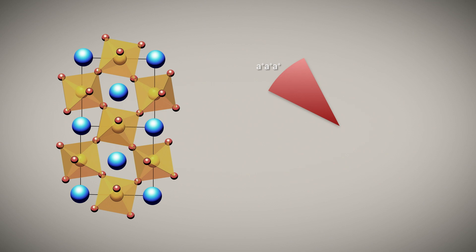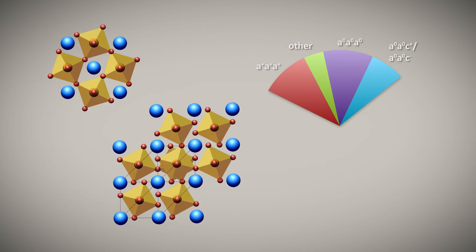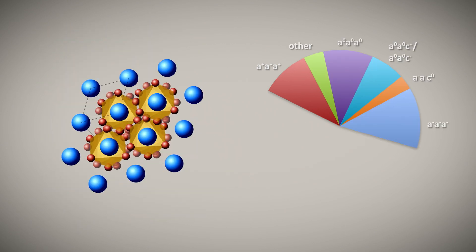There are 23 different rotation patterns, or tilt patterns, which lead to 15 unique space groups.